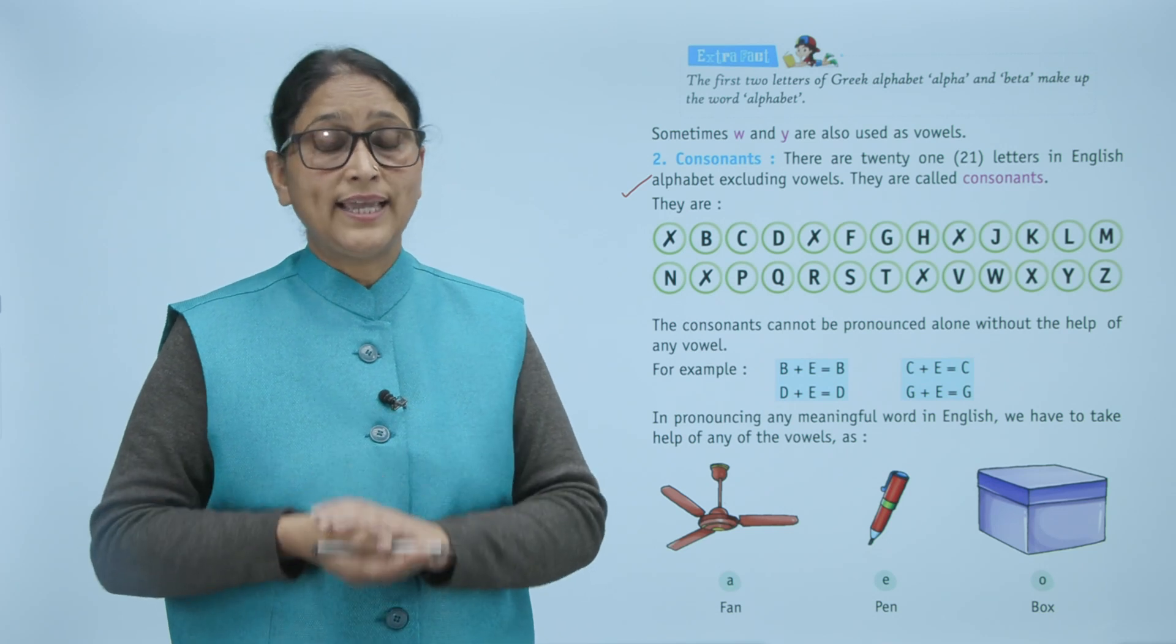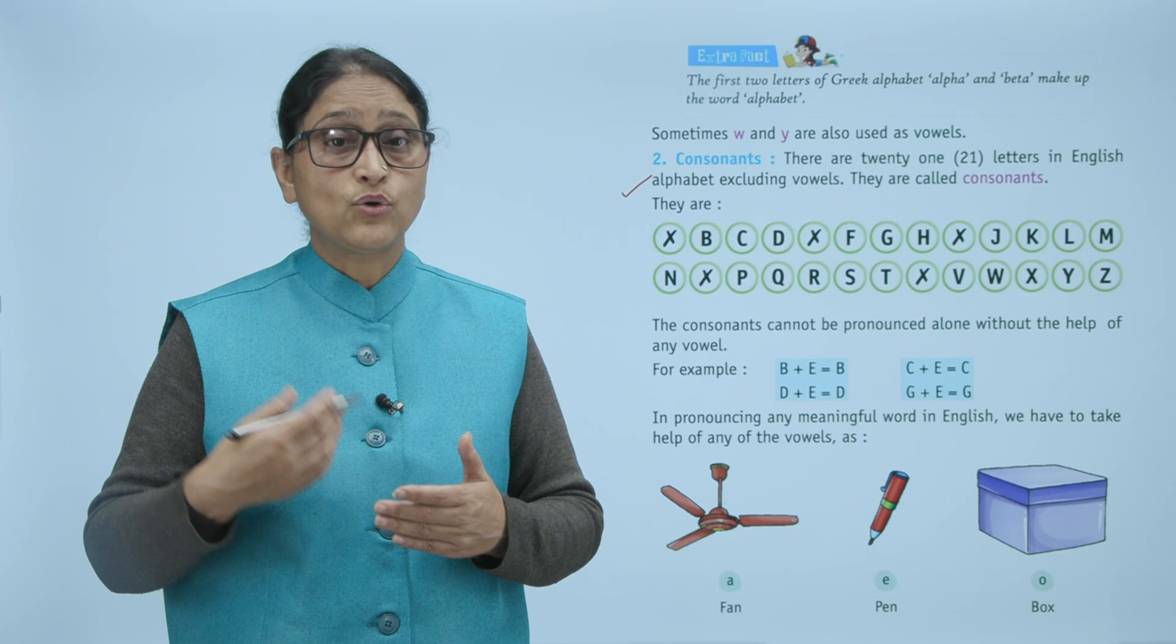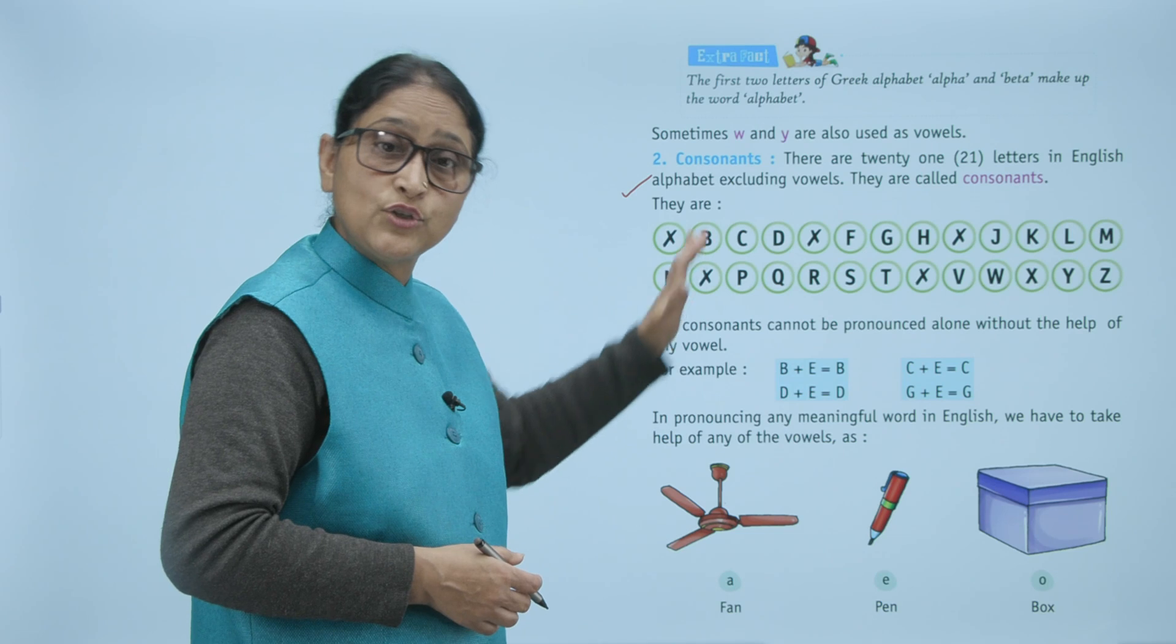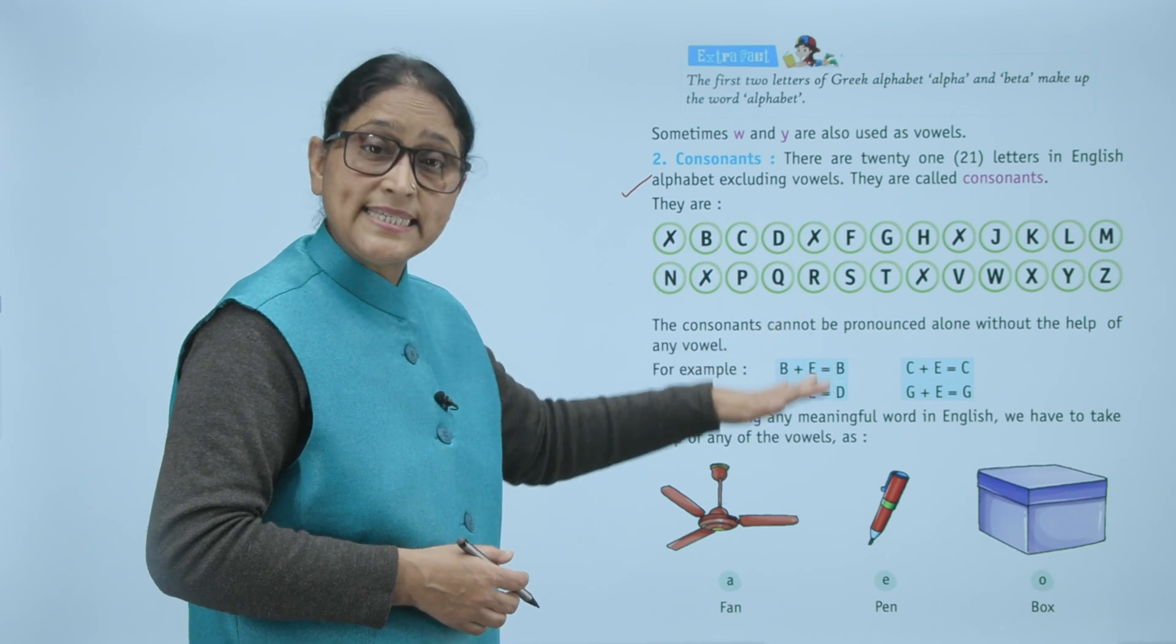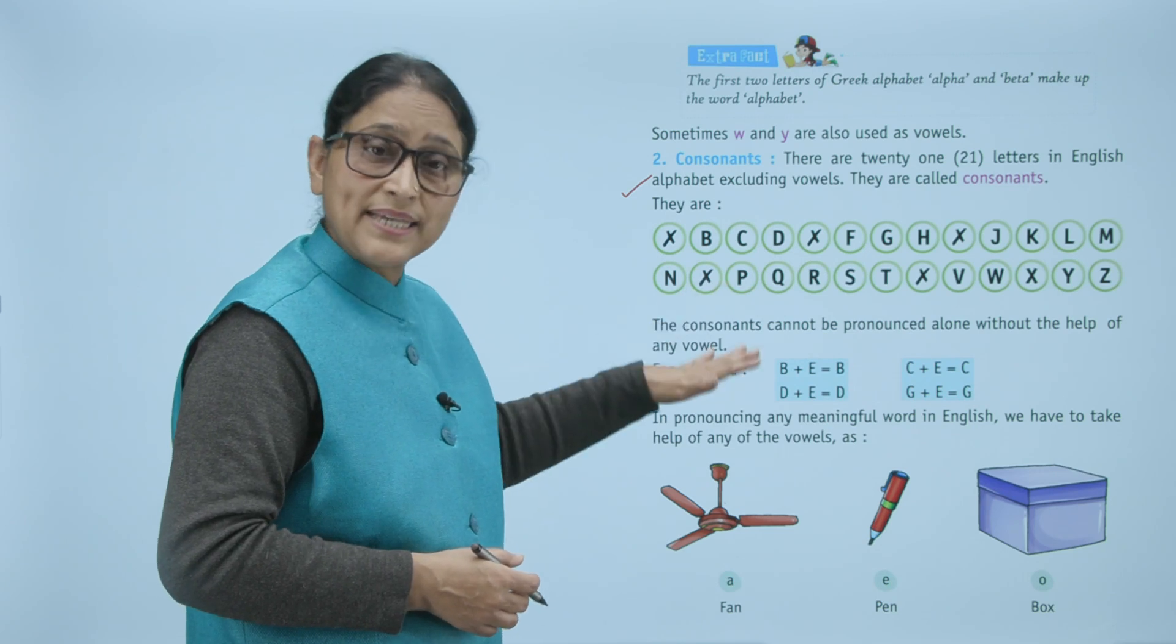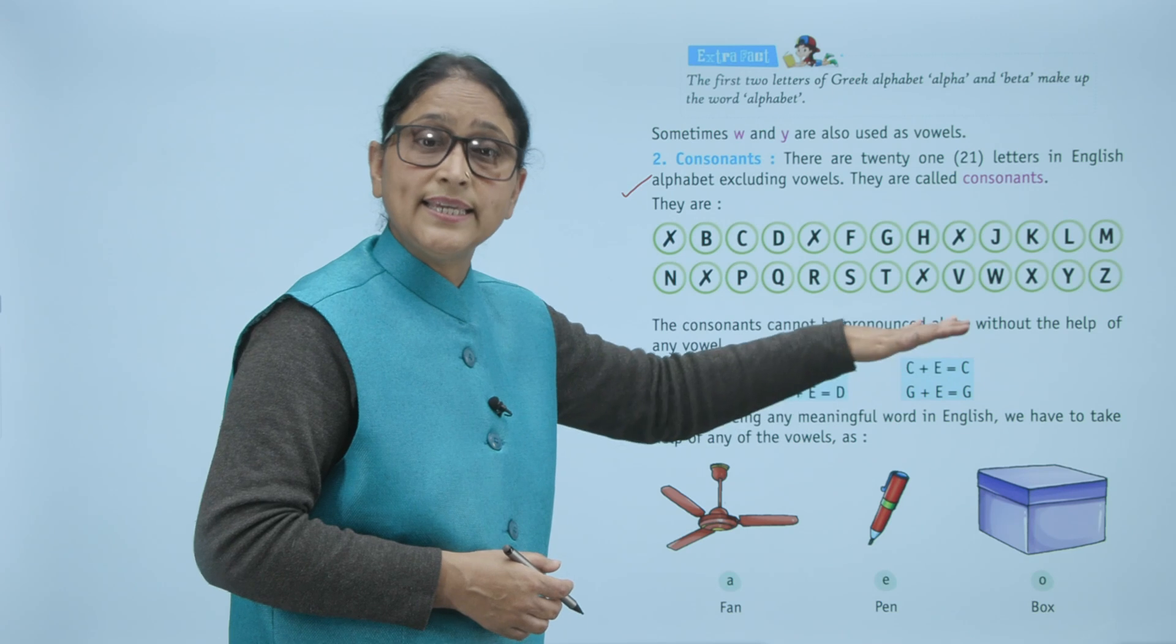For example: B plus E equals B, C plus E equals C, D plus E equals D, G plus E equals G.